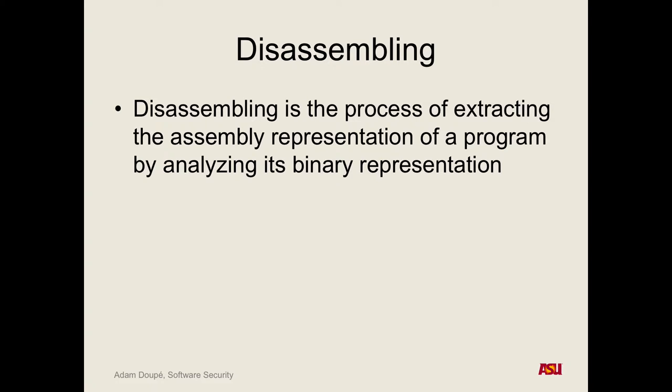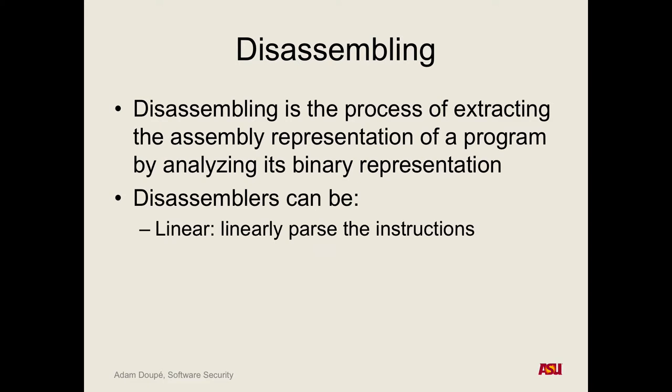Disassembly is the opposite of assembly. An assembler takes an assembly text file and outputs machine-readable ones and zeros. A disassembler takes machine-readable code and turns it into text-based assembly. There are different types of disassemblers. Some, like objdump, disassemble everything linearly. Why is this difficult? Because x86 is a variable-length instruction set architecture — instructions can be one byte or many bytes long.